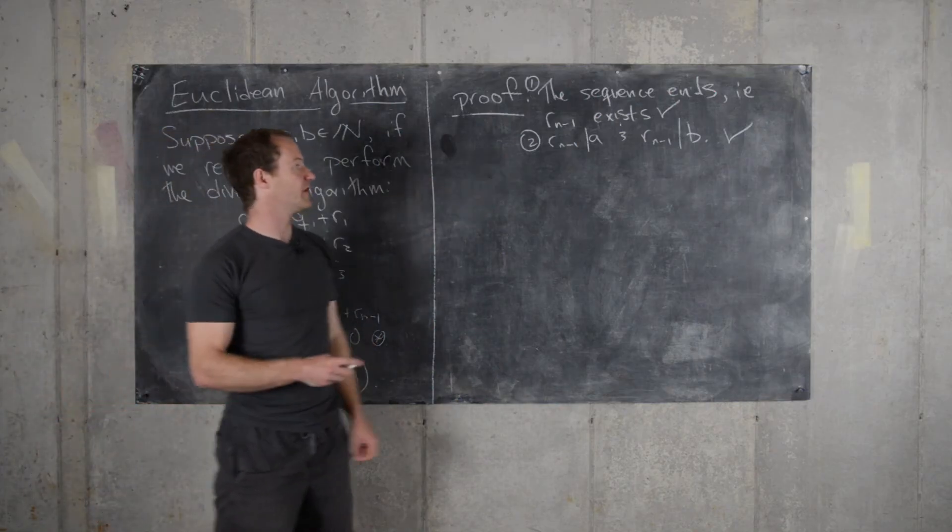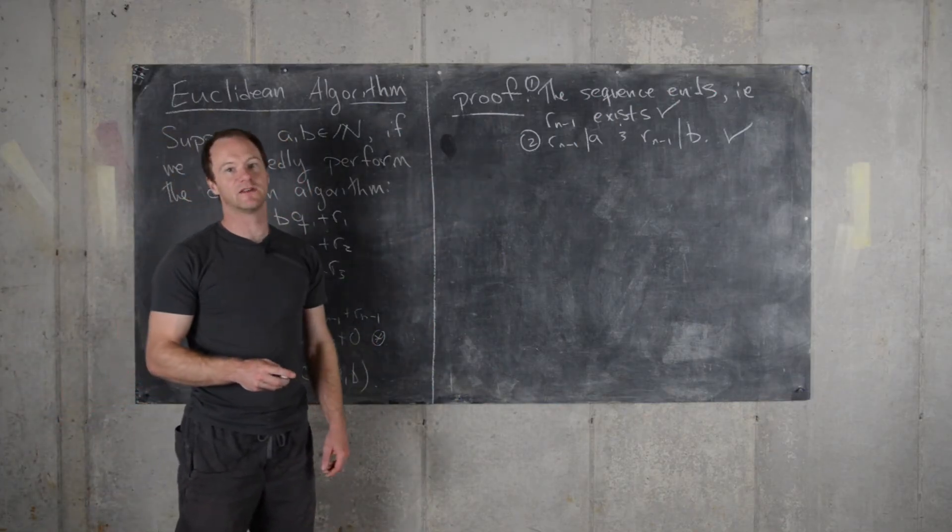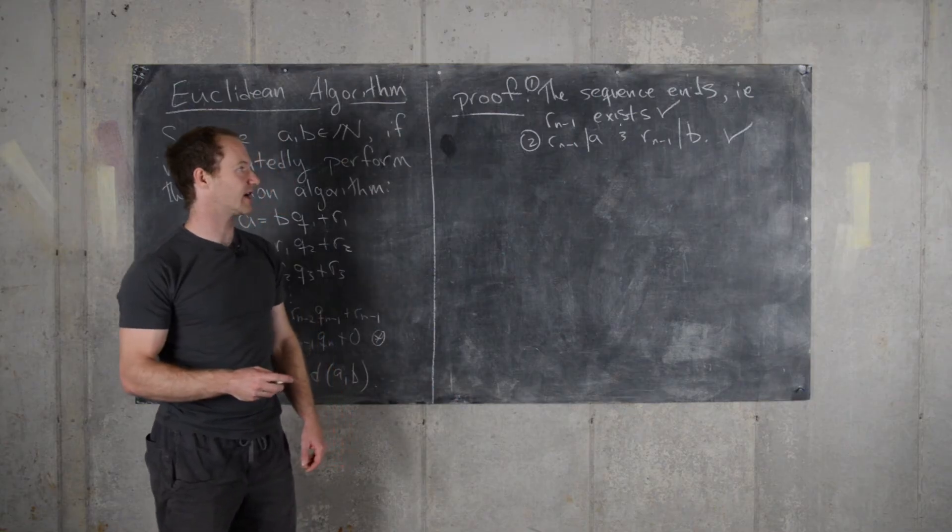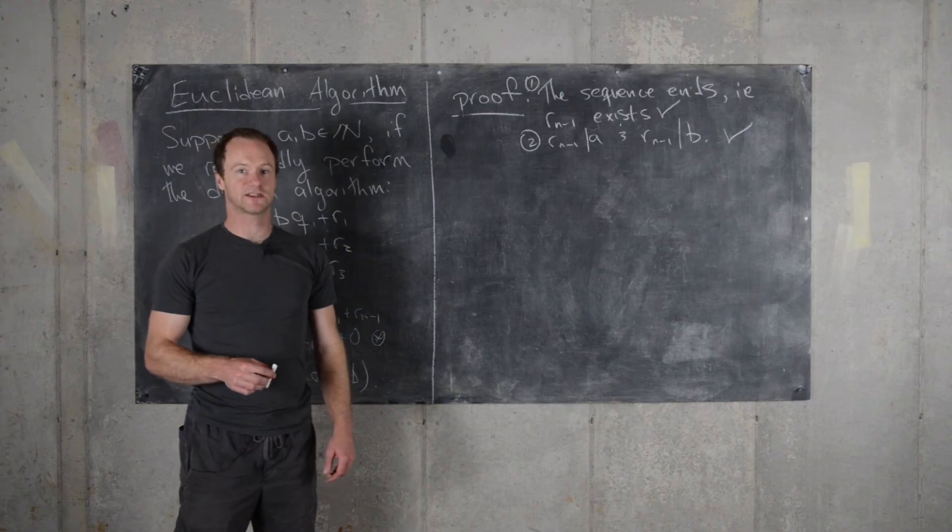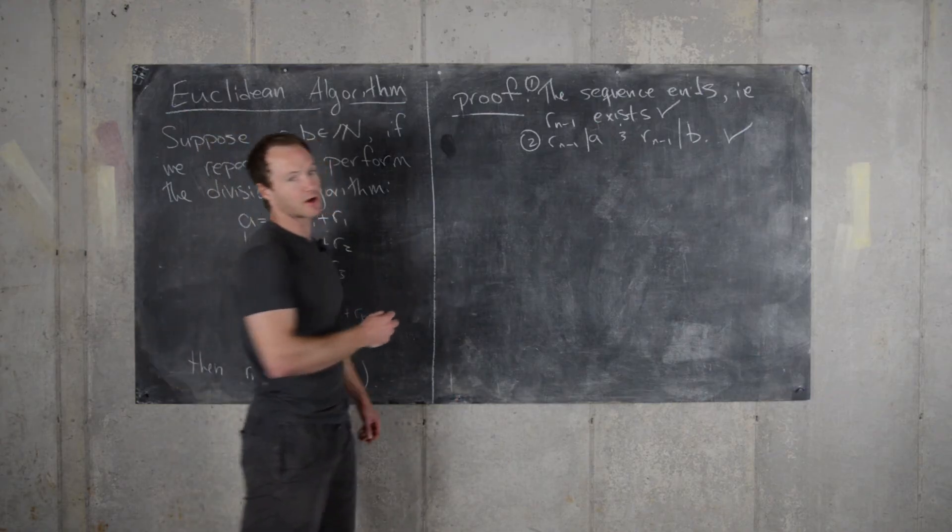And also, we've proven that R N minus 1 is a common divisor of A and B. That is, it divides A and it divides B. So now we want to show that it's in fact the greatest common divisor. So how can we do that?